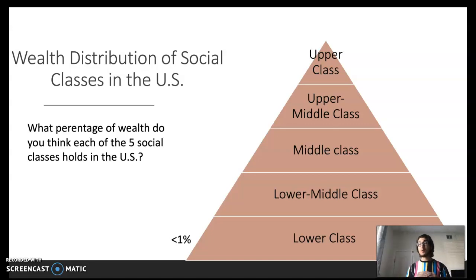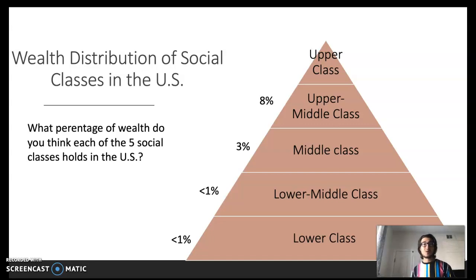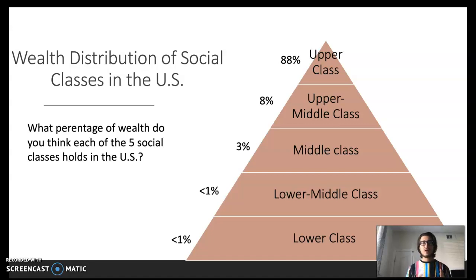The lower class — the poorest 20% of Americans — occupies less than 1% of our nation's wealth. In fact, the poorest 40% of Americans still don't occupy a single percent of our nation's wealth. Moving up, the poorest 60% of Americans — those qualifying as lower class, lower middle class, and middle class — occupy less than 5% of our nation's wealth. Even looking at the poorest 80% of Americans, they only occupy about 10% of our nation's wealth, which means the upper class — the richest 20% — occupies almost 90% of our nation's wealth.